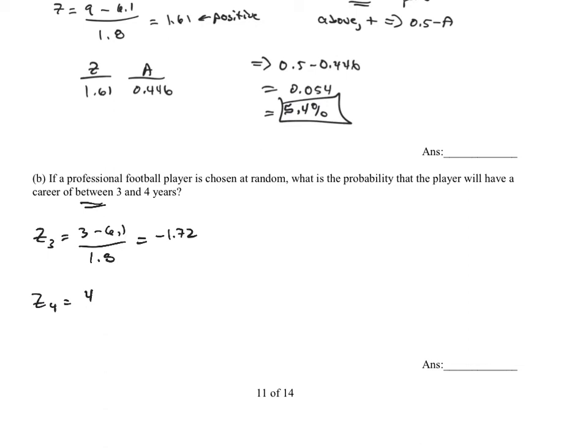Now let's find the Z-score of 4 years. Data, 4, minus the mean, 6.1, divided by the standard deviation, 1.8. 4 minus 6.1 over 1.8. What are you getting? I'm getting negative 1.17. Negative 1.17. So there's my Z-scores. I want you to notice that they're the same sign.